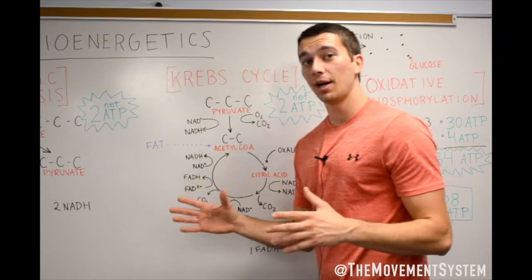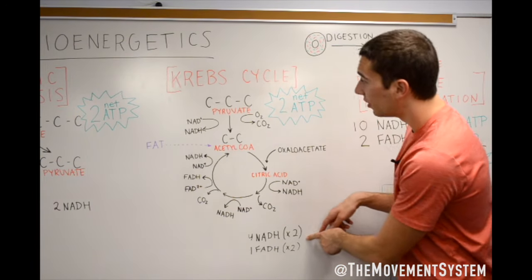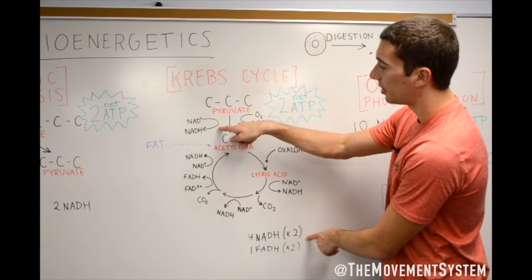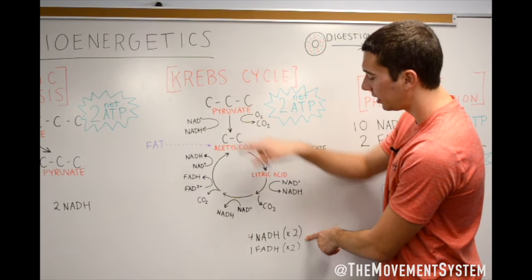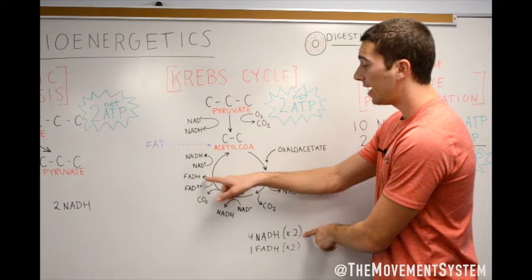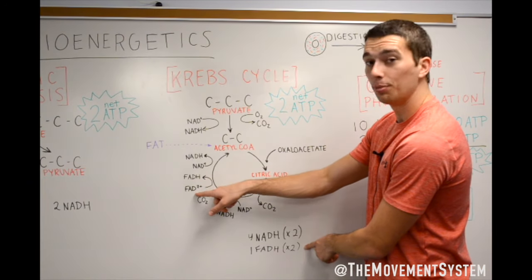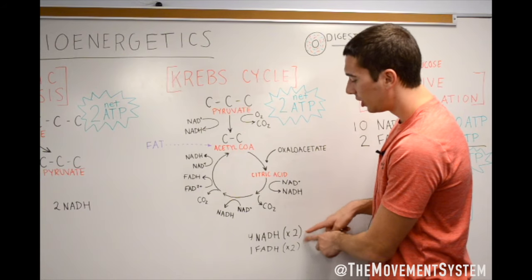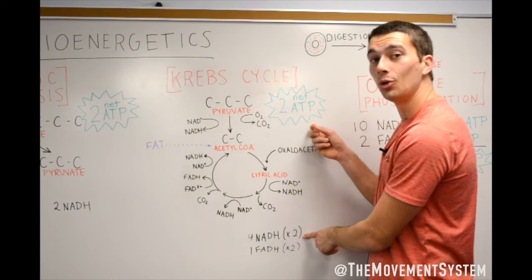So total in the Krebs cycle, we have three NADHs, and then there's actually a fourth one from up here. So a total of four, three within the cycle, that extra one here, four NADHs that come out of the Krebs cycle, one FADH from that FAD2+, so one FADH, four NADHs, and then we also directly just get two ATP.